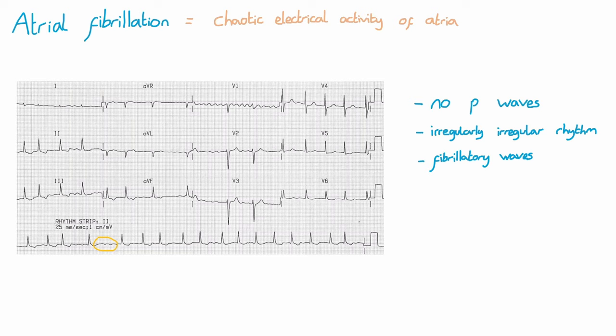AF is often a tachyarrhythmia, with rates often varying from 110 to 160. However, the rate can also be normal or bradycardic. This is often seen when patients are on rate control medications, such as beta blockers.